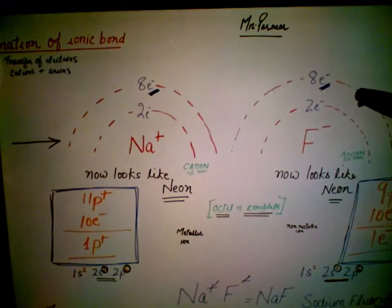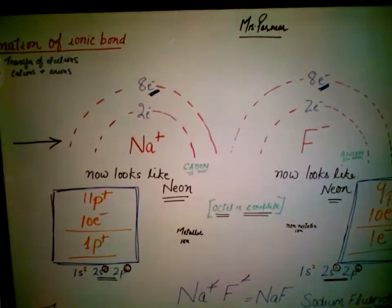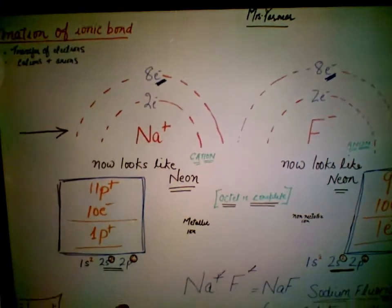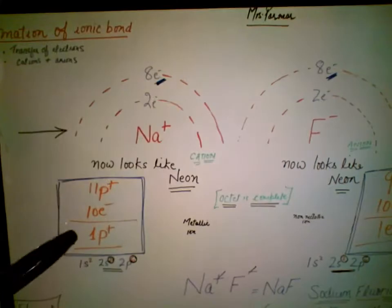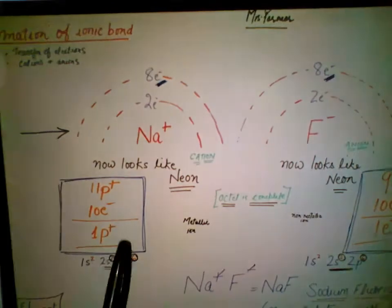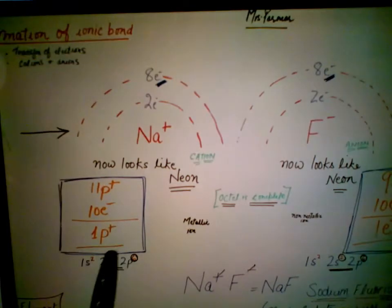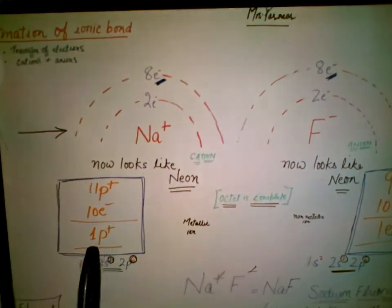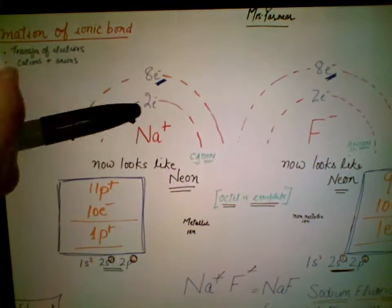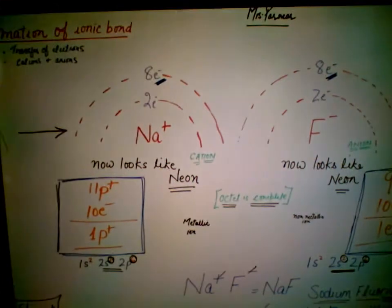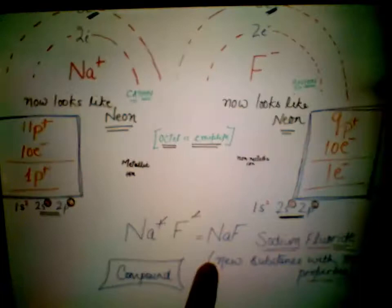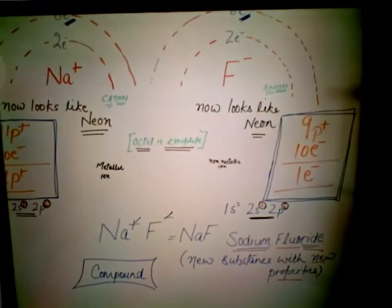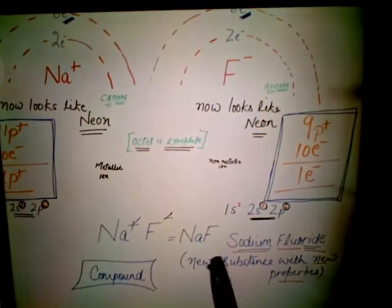How do we know it is a 1+ charge? Sodium has 11 protons and 11 electrons; after losing one electron, protons are prevalent by one — that's why you have a one positive charge. For fluorine, electrons are prevalent by one, giving a one negative charge. The octet is complete and we have sodium fluoride — NaF — a new substance with new properties.